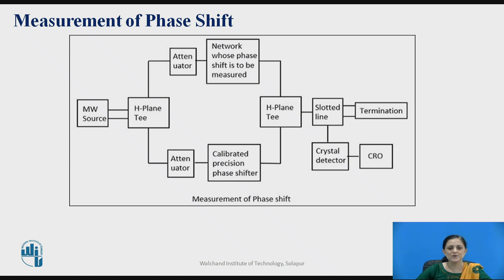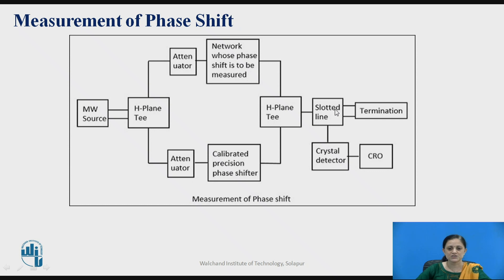By using this property of the H-plane T, we can connect the output of the network whose phase shift is to be measured and the calibrated precision phase shifter output. These two are added, and at the output of the H-plane T, the output signal is in phase. It is then given to the slotted line section of the microwave bench. After the slotted line section, one port is terminated by matched termination and the other port output is observed on a CRO using a crystal detector.